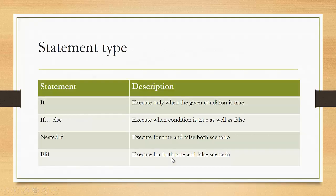So basically these statements belong to four categories. First one is the if statement — this executes only when the given condition is true. For a false condition, no statement executes if you are using only the if statement. Second is if-else, which executes when the condition is true as well as false. Third is nested if, which also executes for both true and false condition scenarios. Last one is elif — elif means ladder if-else, but in Python they use the word elif — and it also executes for both true and false scenarios.